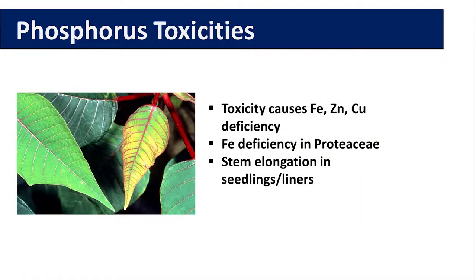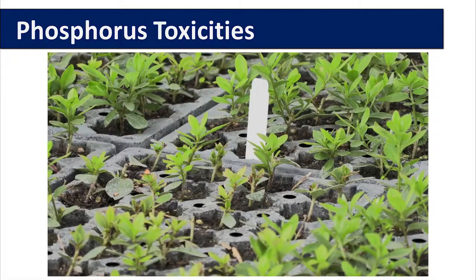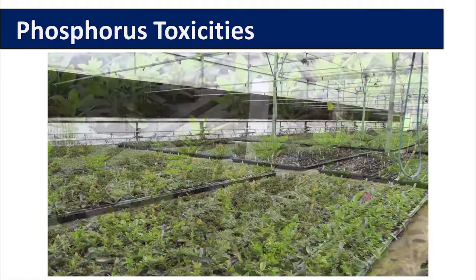There can also be toxicities of phosphorus in container production. Toxicity can occur if there is excess phosphorus in the soil, which can interfere with the uptake of iron, zinc, and copper and cause deficiency symptoms of these nutrients. Phosphorus toxicity can also occur in plants from Proteaceae, since they are sensitive to phosphorus. High soil phosphorus levels can cause iron deficiency — a chlorosis of the newest growth — and also stem elongation, which is a problem in seedling and young plant production in greenhouses.